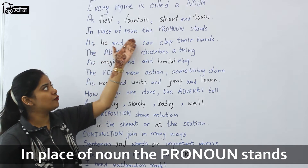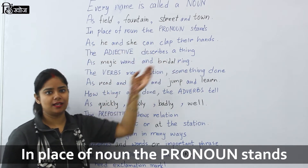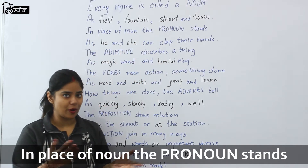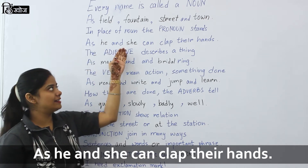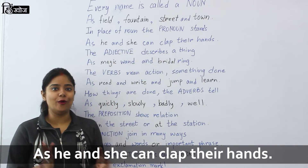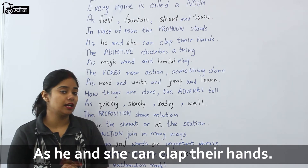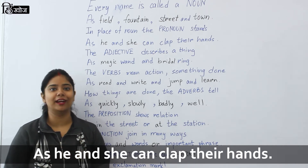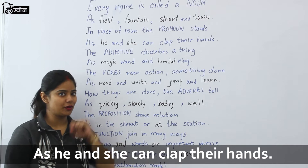In place of noun, the pronoun stands. We use the pronoun in the place of noun. As he and she can clap their hands. So I have used he and she — he and she are pronouns.